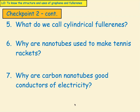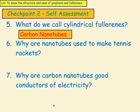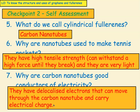Here are some more questions about nanotubes. Pause the video now and come back when you've answered these questions. Let's self-assess. What do we call cylindrical fullerenes? We call them carbon nanotubes. Why are nanotubes used to make tennis rackets? They have a high tensile strength, meaning they can withstand a high force until they break, and they are also very light. Why are carbon nanotubes good conductors of electricity? They're good conductors of electricity because they have delocalised electrons that can move through the carbon nanotube and carry electrical charge.